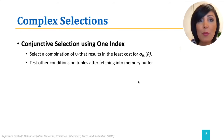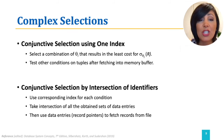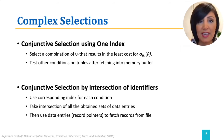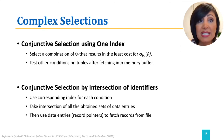We can also perform conjunctive selection by intersection of identifiers. This means we use the appropriate index or access path for each condition, then take the intersection of all the obtained sets of record pointers, and then fetch the records from the file based on the pointers of the data entries in the index. If some conditions do not have appropriate indexes, we apply the test for those conditions on the records fetched into memory, which is possible because of the conjunctive nature — it adds additional filter conditions to the currently fetched tuples.